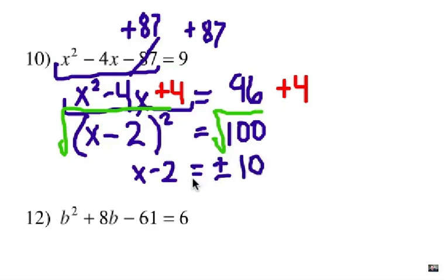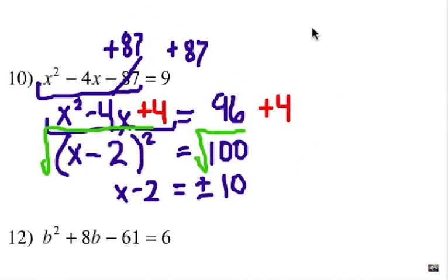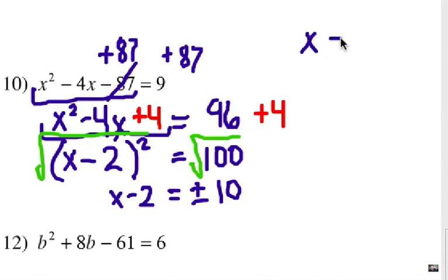equals the positive and the negative 10. Alright, now let's do it in two stages. We have to add 2 to each side. So I'm going to have X equals positive and negative 10 plus 2.